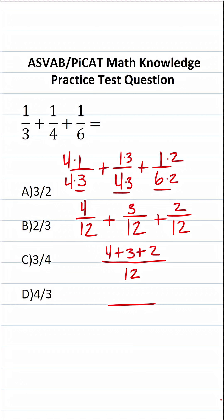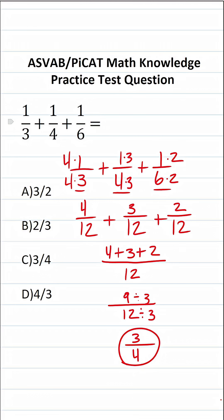4 plus 3 is 7, plus 2 is 9. So this is 9 over 12. Now 9 over 12 isn't an answer choice because we can reduce this by a common factor of 3. 9 divided by 3 is 3, and 12 divided by 3 is 4. So 1/3 plus 1/4 plus 1/6 equals 3/4.